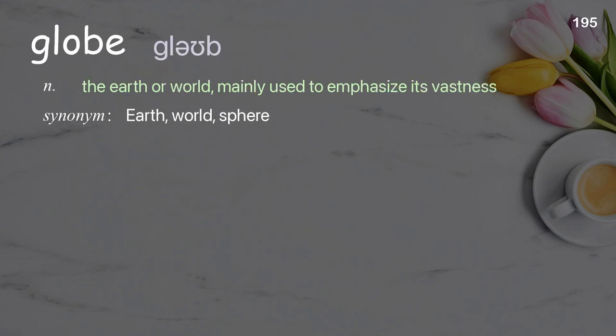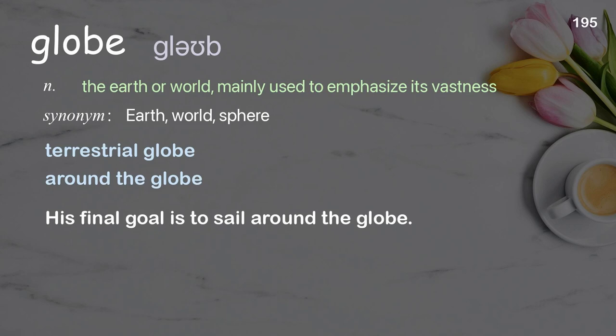Globe: the Earth or world, mainly used to emphasize its vastness. Examples: terrestrial globe; around the globe. His final goal is to sail around the globe.